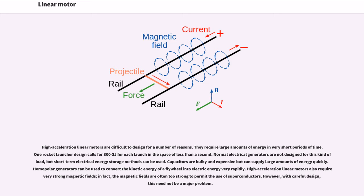Normal electrical generators are not designed for this kind of load, but short-term electrical energy storage methods can be used. Capacitors are bulky and expensive but can supply large amounts of energy quickly. Homopolar generators can be used to convert the kinetic energy of a flywheel into electric energy very rapidly. High-acceleration linear motors also require very strong magnetic fields. In fact, the magnetic fields are often too strong to permit the use of superconductors.